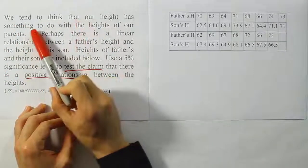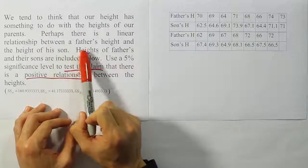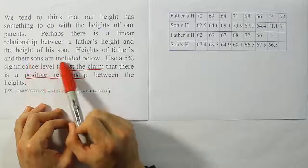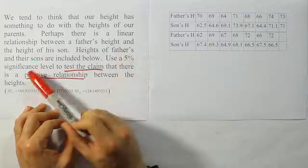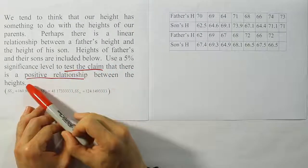We tend to think that our height has something to do with the heights of our parents. Perhaps there is a linear relationship between a father's height and the height of his son. Heights of fathers and their sons are included below. Use a 5% significance level to test the claim that there is a positive relationship between the heights.